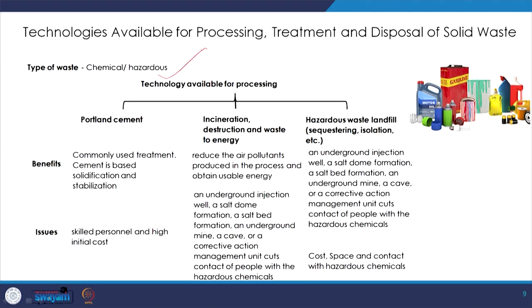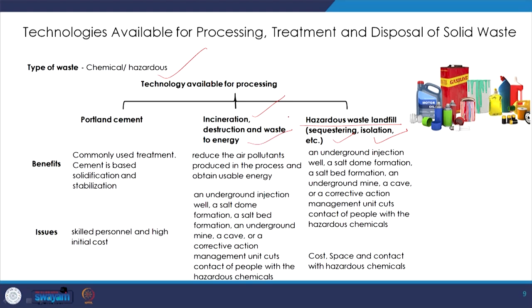For chemical and hazardous waste, we look at hazardous waste landfill, sequestering and isolation — packing and concentrating them in sealed containers so they are not mixed or released into the environment. We also look at incineration, destruction, or waste-to-energy where the chemicals or hazardous materials can be combusted without releasing hazardous gases. Another common treatment is to mix it with Portland cement for stabilization and solidification. However, the most commonly adopted approach is the hazardous waste landfill, where we sequester and isolate it.